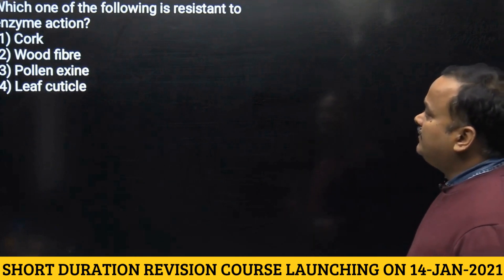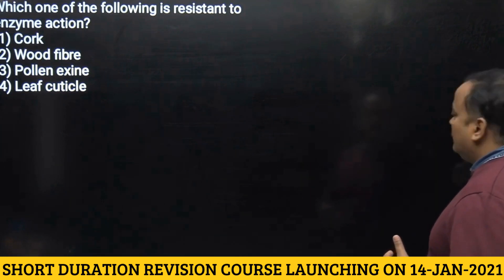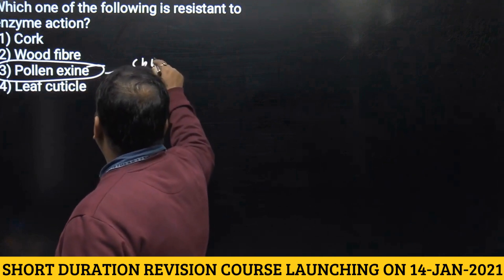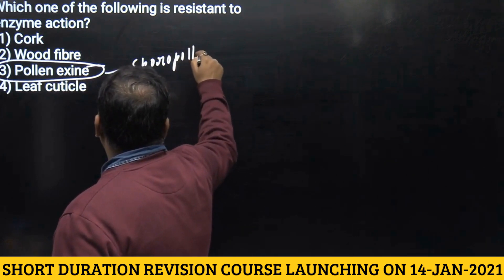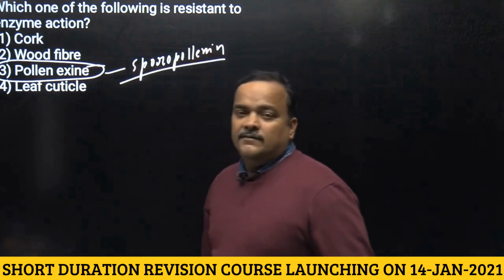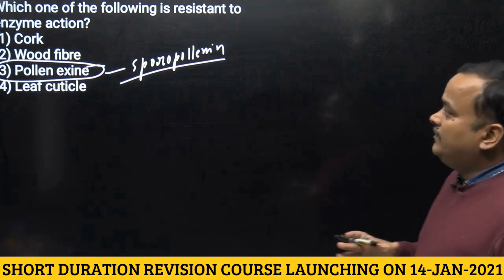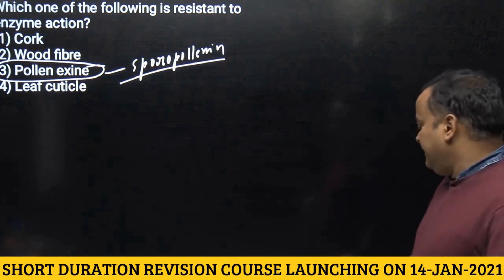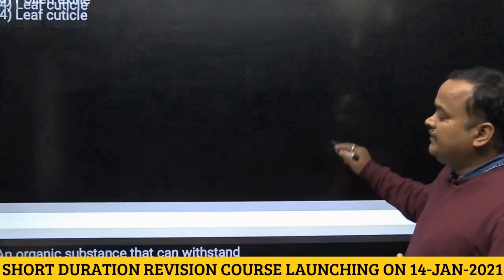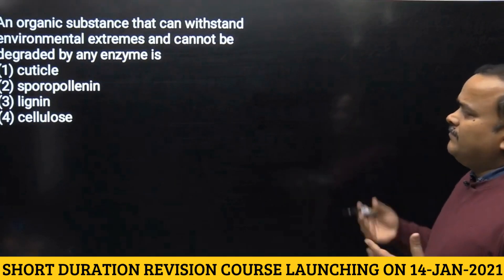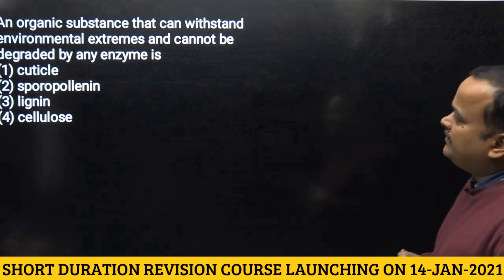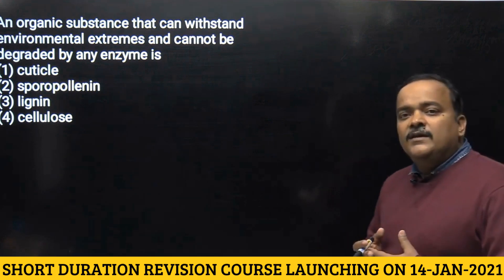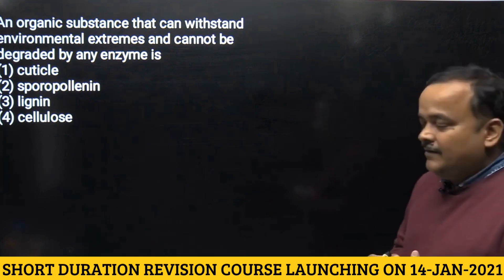The next question asks which one of the following is resistant to enzyme action. Sporopollenin, which makes up the pollen exine, is highly resistant organic material. No enzyme, no alkali, and no acid can degrade it, so it is resistant to enzyme action. A related question asks for an organic substance that can withstand environmental extremes and cannot be degraded by any enzyme — that is sporopollenin. The answer will be the second option.